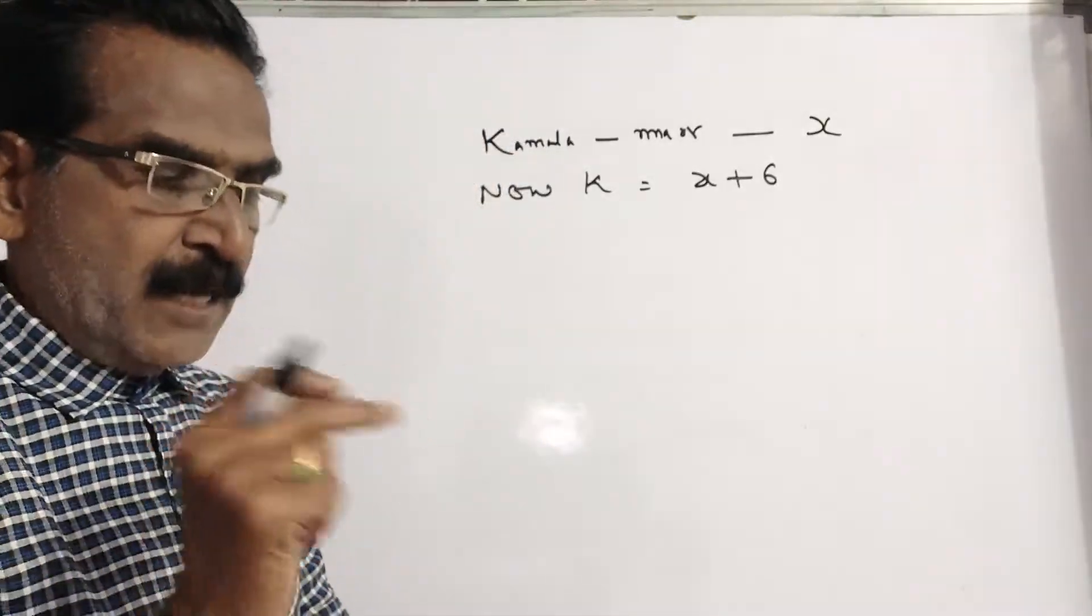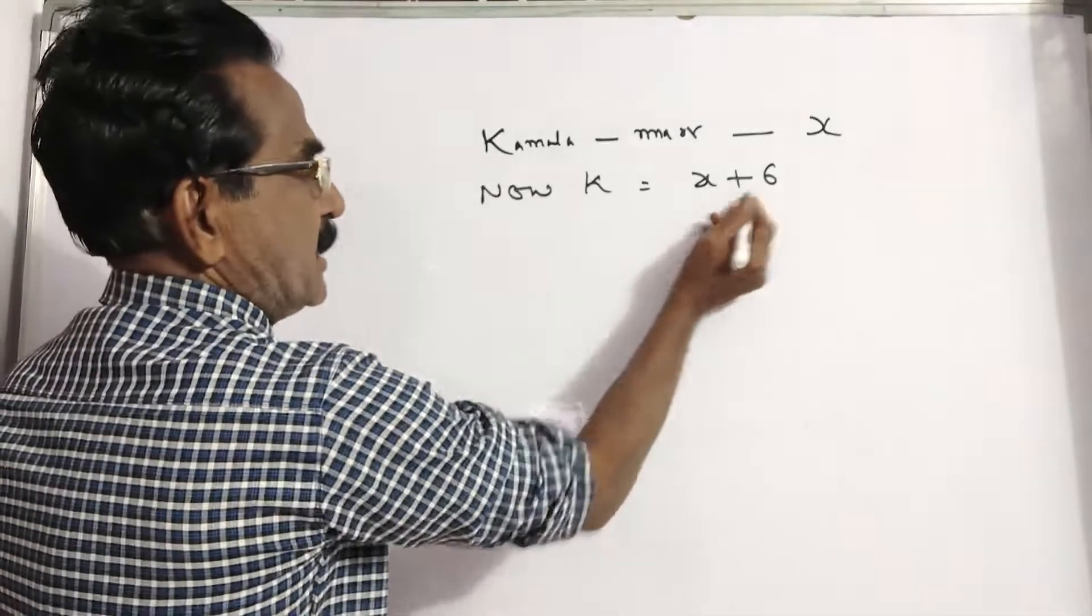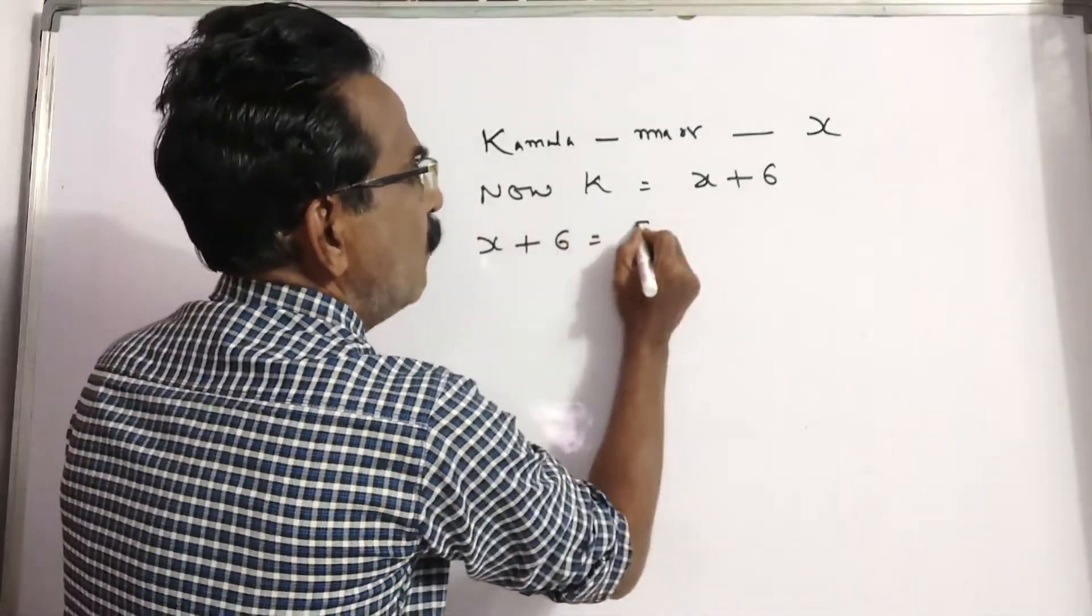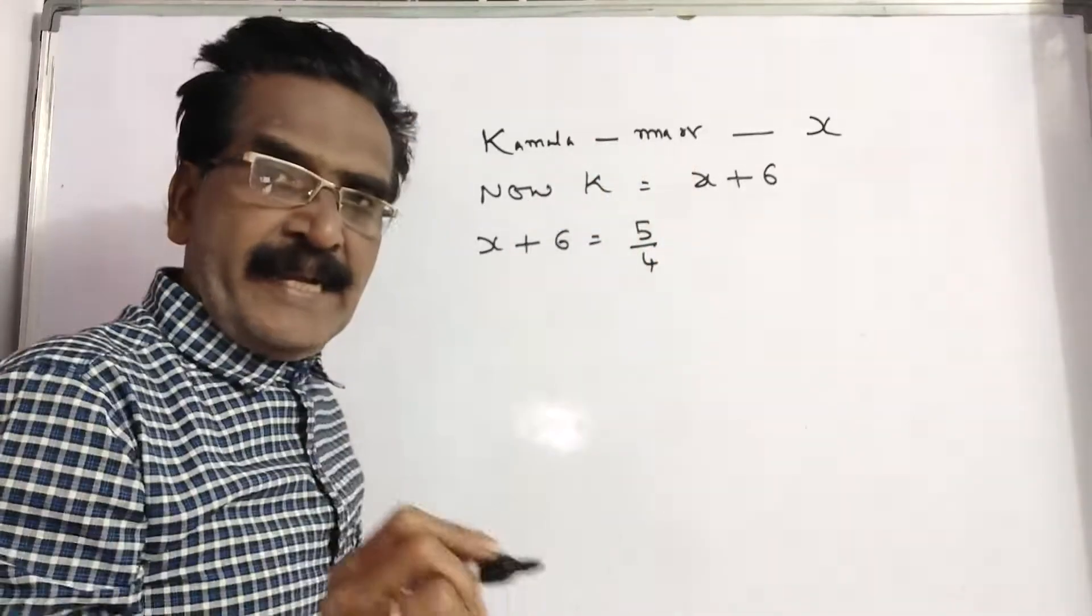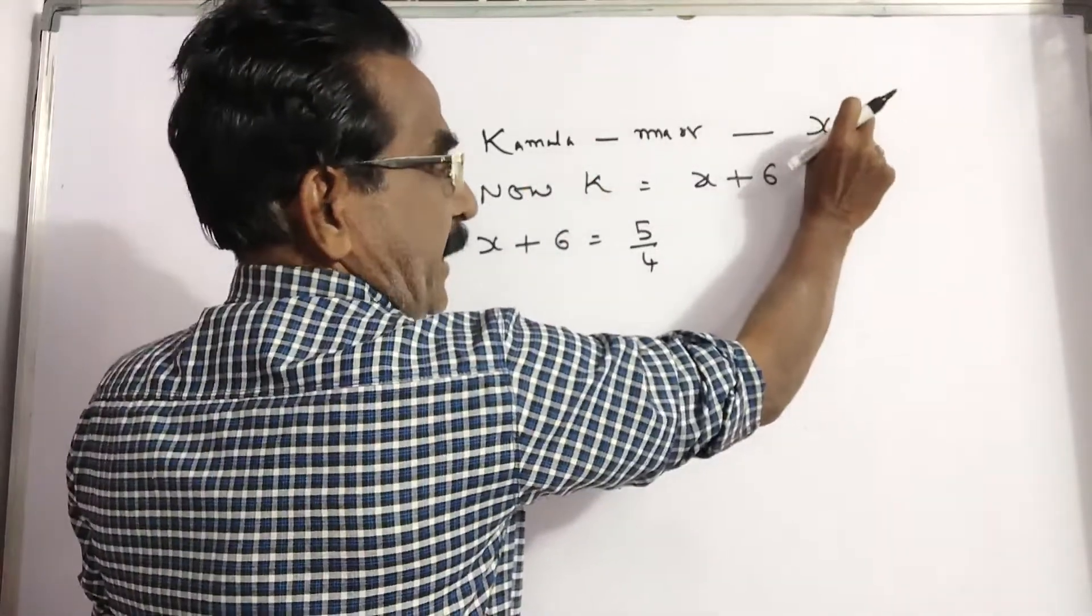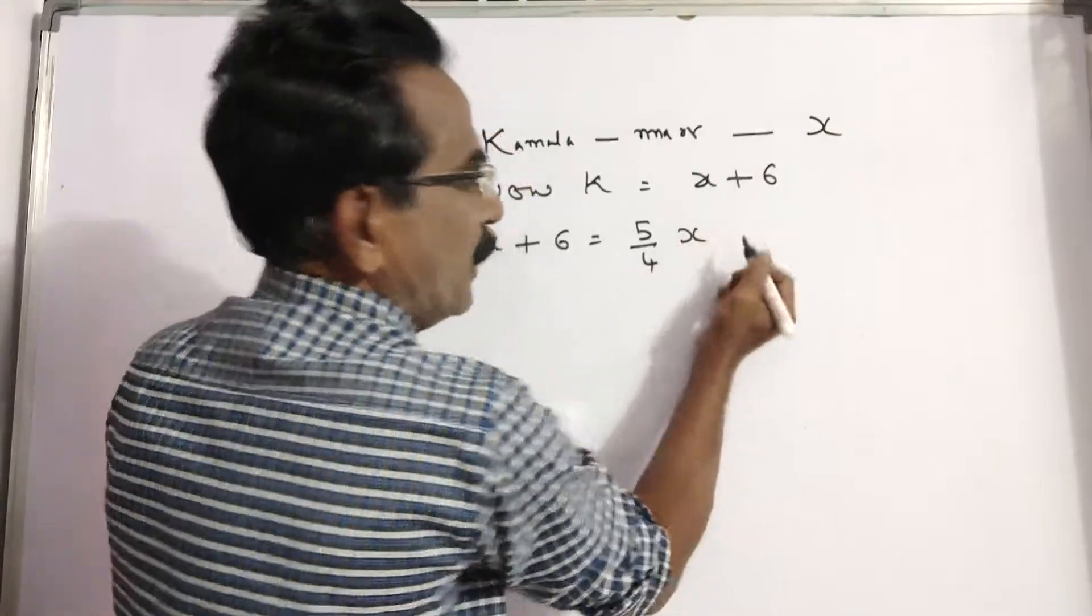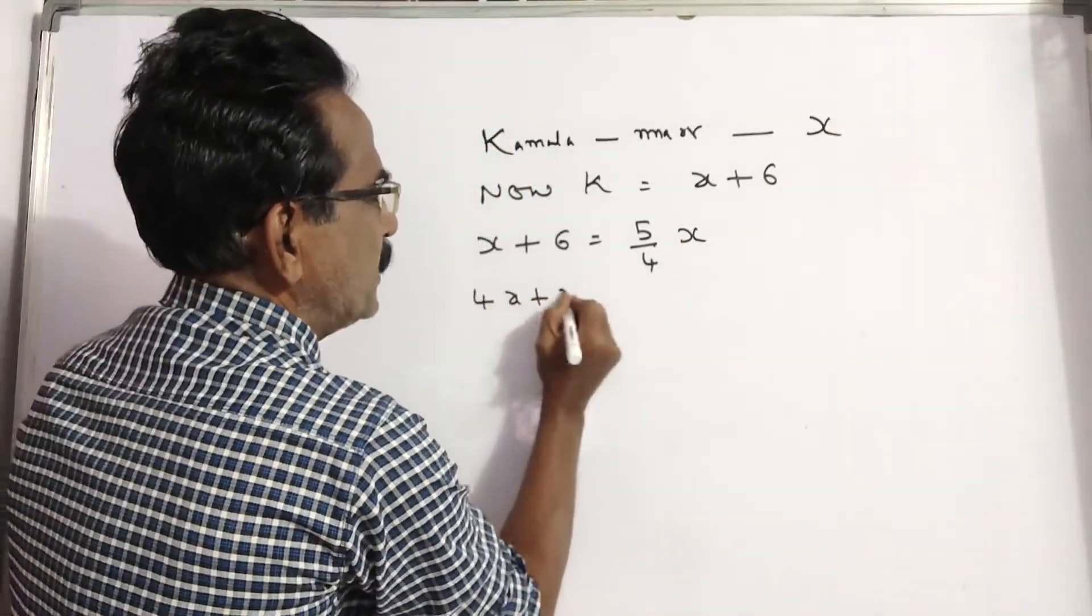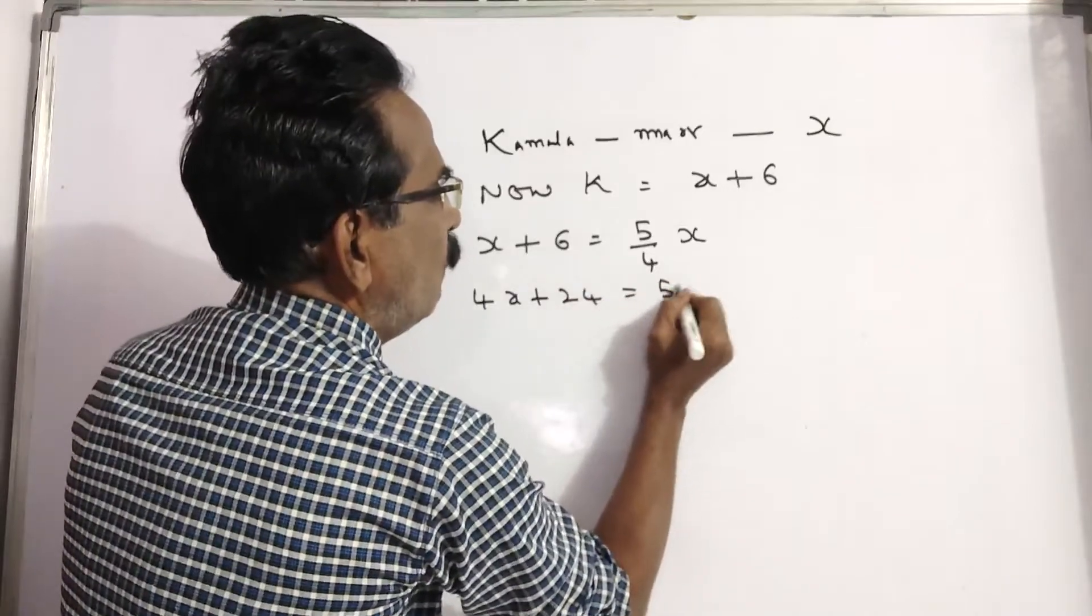What the problem is, today her age is 5 by 4 times of her age at the time of marriage. At the time of marriage Kamala was X. Now, 4X plus 24 is equal to 5X.